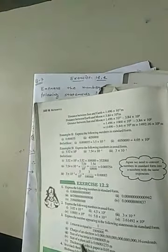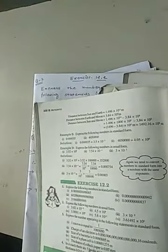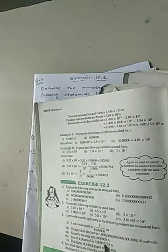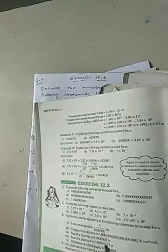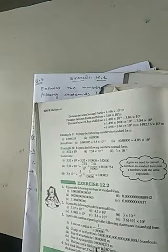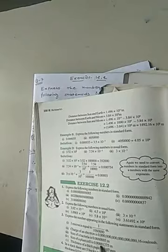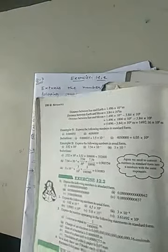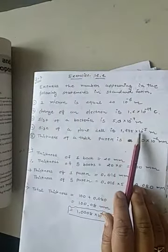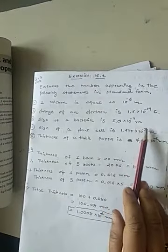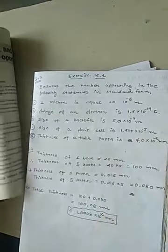Next question, plant cell. Size of plant cell is given. So, point is here. It will come after 1. So, how many steps it will move? 1, 2, 3, 4 and 5. 5 steps to the right. So, 1.275 and 10 raised to minus 5 because 5 steps to the right.